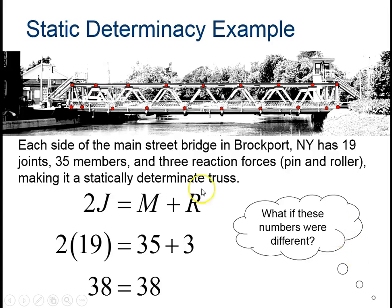Here's an example of a bridge in New York. Same formula. Count the number of joints. You can count the red dots. Count the number of members and the reaction forces, and you'll see that this is determinate. Notice that it does, in fact, have rollers on one end and a pin joint on the other.